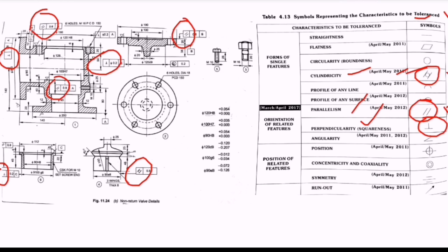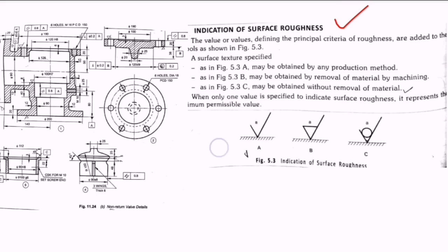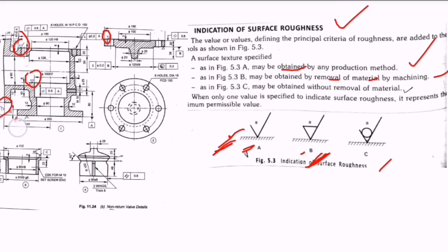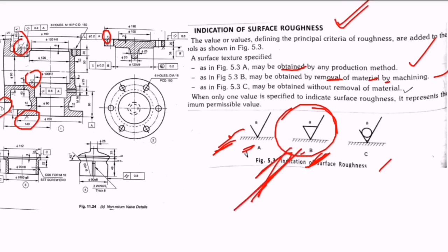Next, the surface roughness symbols. There are three different types. The first is the basic symbol — the surface may be obtained by any production method. The second symbol indicates that material removal by machining is required; wherever you see this triangle symbol, it means machining is required at that surface. This symbol is indicated wherever removal of material by machining is required.